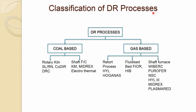The classification of direct reduction processes: we have talked about natural gas as a reducing agent and coal as a reducing agent. There are two classifications — one is coal-based and the other is gas-based.